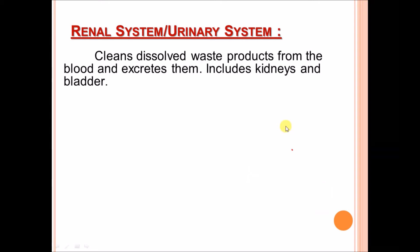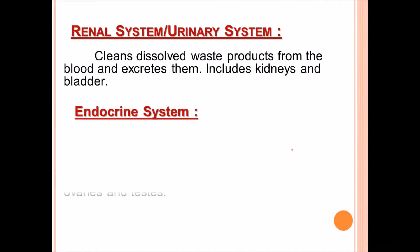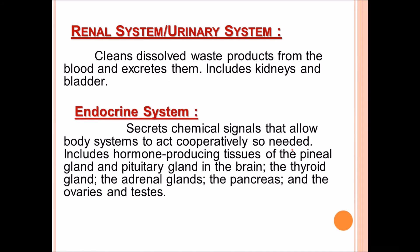The renal or urinary system cleans and dissolves waste products from the blood and excretes them. It includes the kidneys and the bladder. Next is the endocrine system, which secretes chemical signals that allow body systems to act cooperatively as needed.